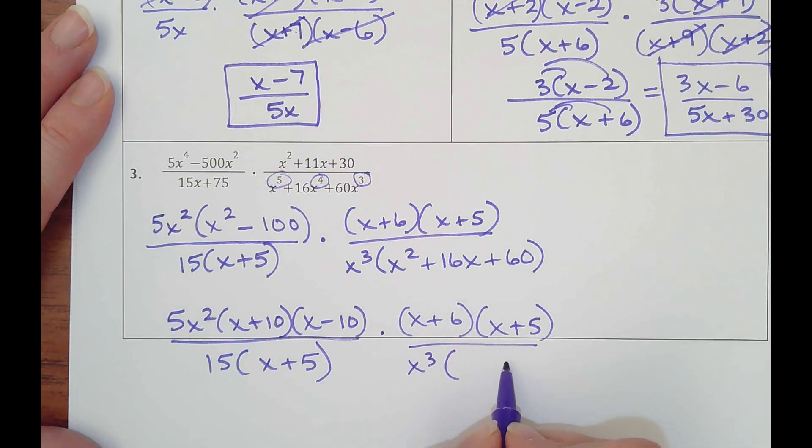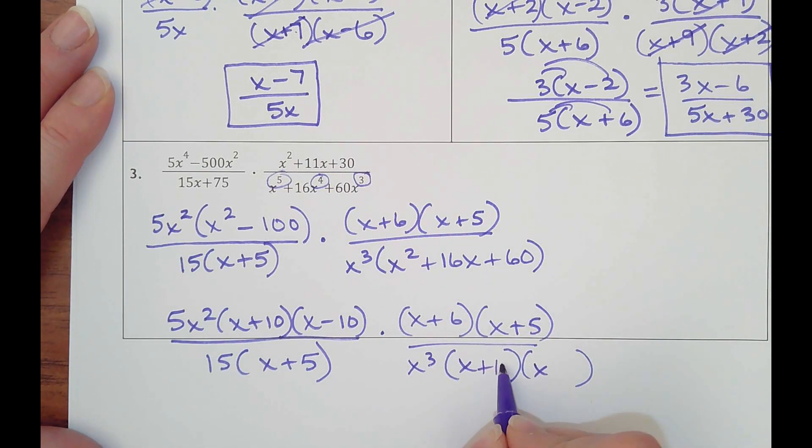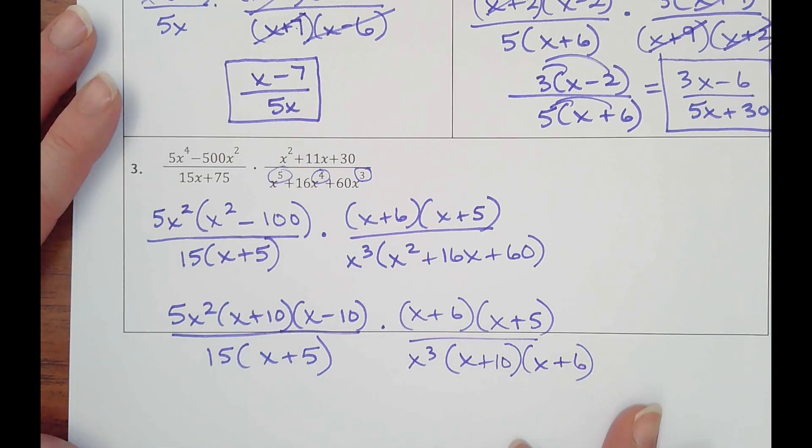And then this would be a basic trinomial. Two numbers multiply to make 60 that add to make 16. That's pretty obvious, 10 and 6. Okay, and so now I'm ready to cancel.